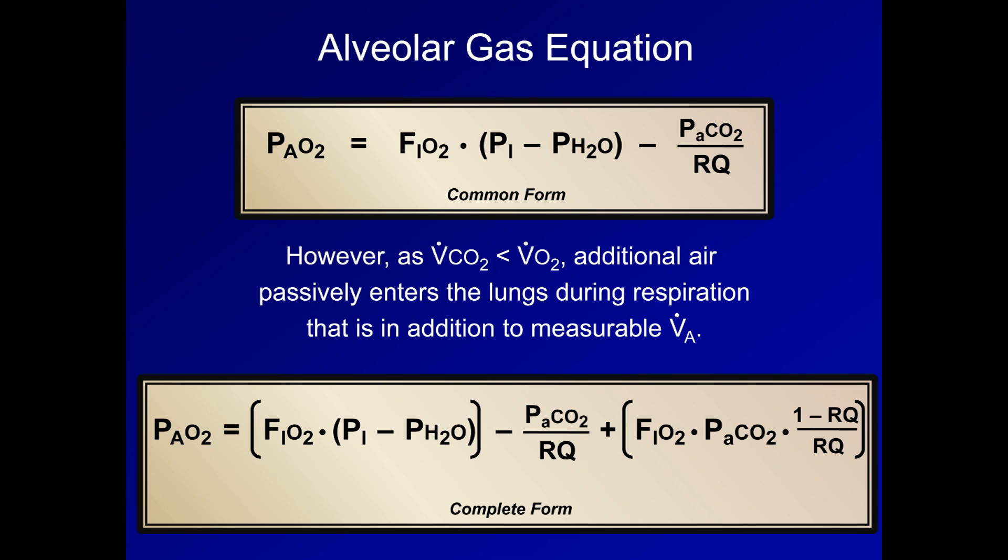For example, for a patient with normal respiratory physiology breathing room air, this final term equals 0.21 times 40 times 1 minus 0.8 divided by 0.8. This equals a minuscule 2.1 mmHg. Compare the magnitude of this to that of the first term, which is normally 150, and the second term, which is normally 50. Therefore, for all practical purposes, this last term can be ignored, reducing the complete form back to the common form above.